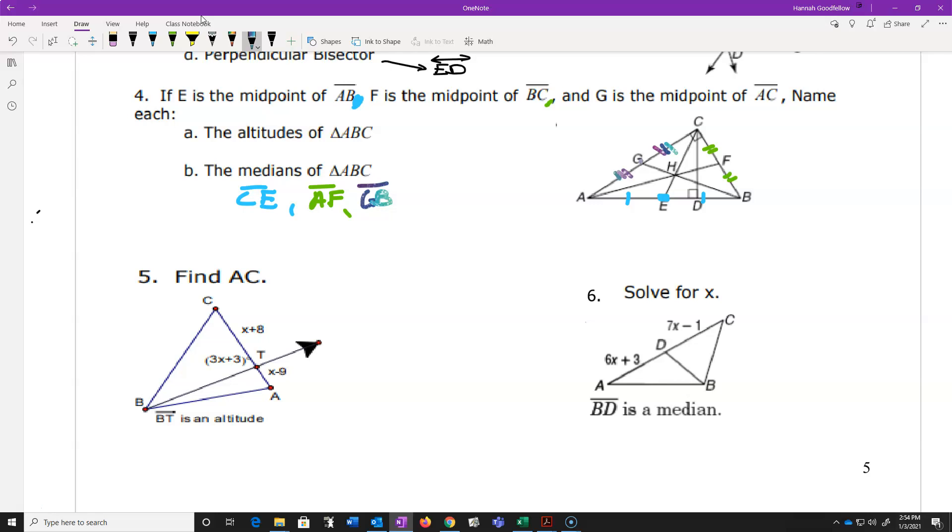Now, the others that you're looking at are altitudes. Now, altitudes come from a vertex and go to the opposite side and make a perpendicular. So here is a perpendicular right here. And that goes up the way and it hits the actual vertex like that. That must be an altitude of what's going on right there. So I've got CD is one of them.